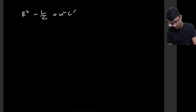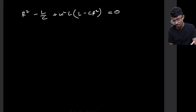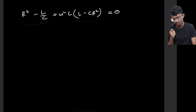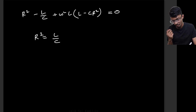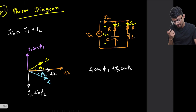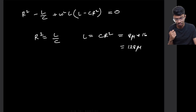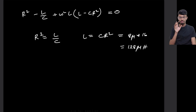This equation must be valid for all frequencies. Since ω cannot be zero and L cannot be zero, we need L − CR² = 0, meaning R² = L/C. Therefore L = CR². With C = 8 microfarad and R = 4 ohms: L = 8×10⁻⁶ × 16 = 128 microhenry.